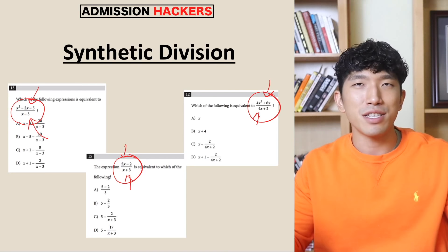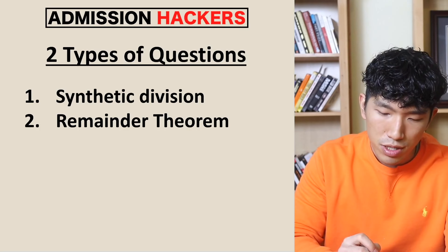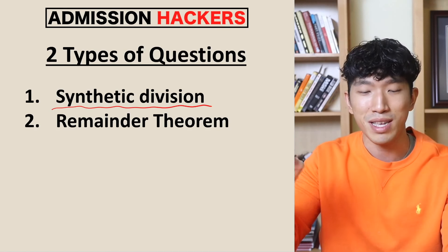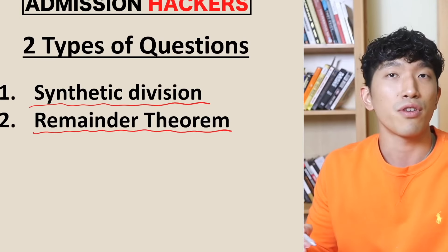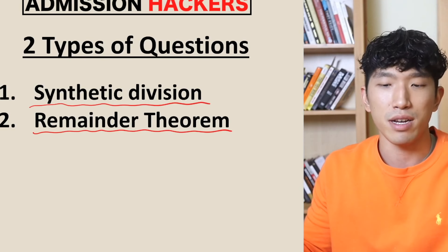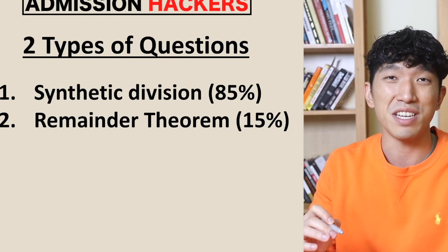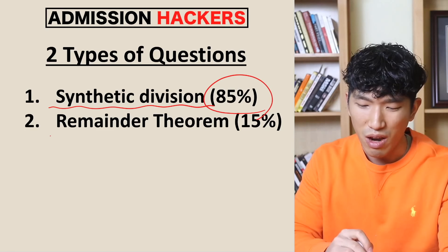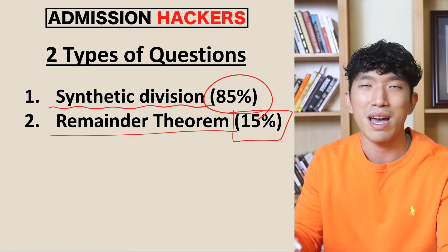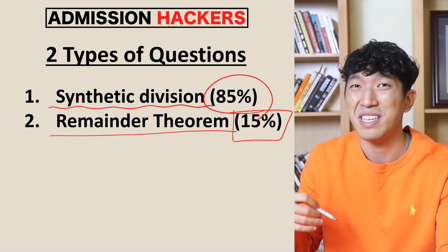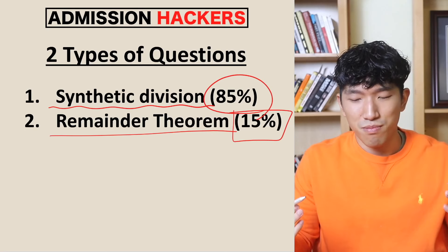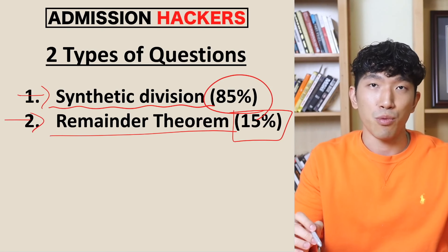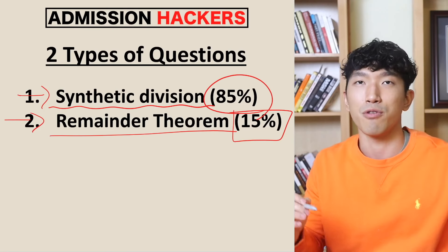These types of questions are really testing you on just two things. First is doing regular synthetic division — how to divide a polynomial by a polynomial. Second is the remainder theorem. About 85% of the questions on the SAT are just based on dividing an expression by an expression, and remainder theorem shows up about 15% of the time. If you're running out of time, focus solely on synthetic division. If you have extra time, go over remainder theorem as well to be fully bulletproof.